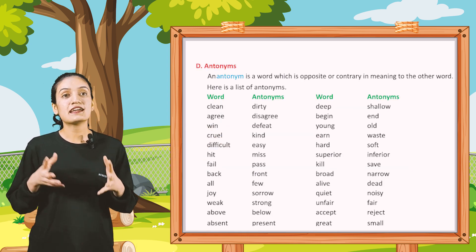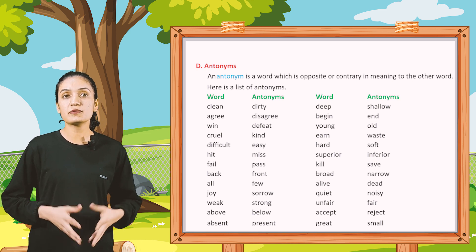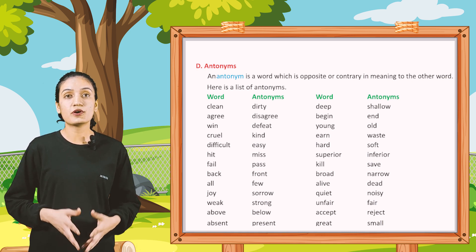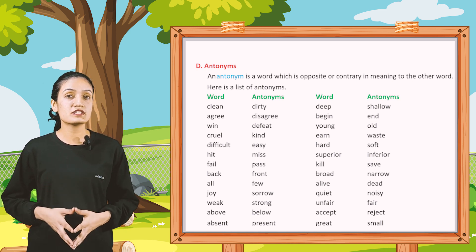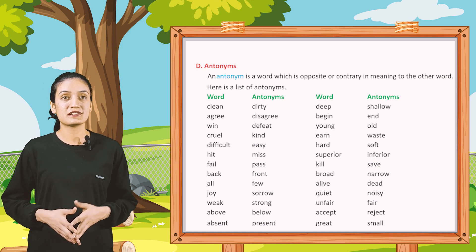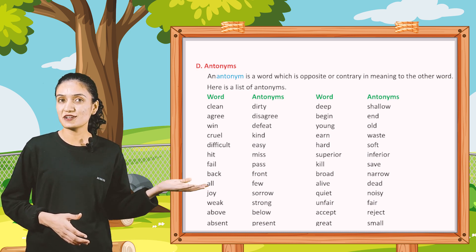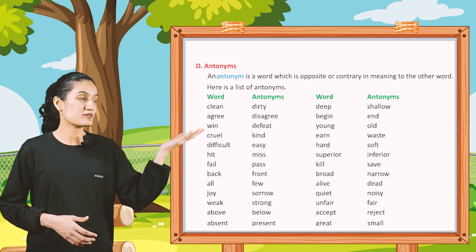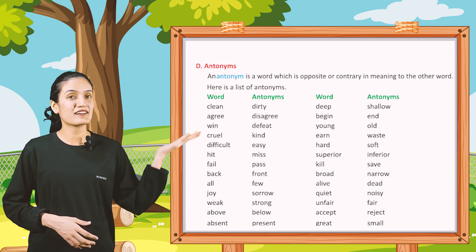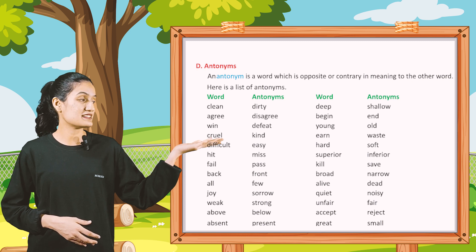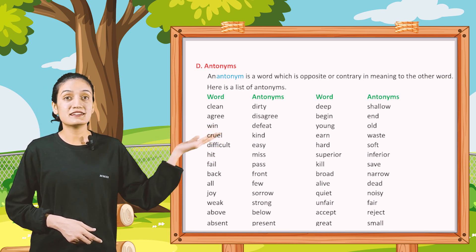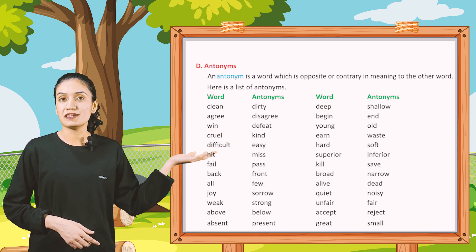So in this way write down the synonyms of the words in brackets. Now part D. An antonym is a word which is opposite or contrary in meaning to another word. Here is a list of antonyms. Words and their antonyms: Clean — Dirty. Deep — Shallow. Agree — Disagree.